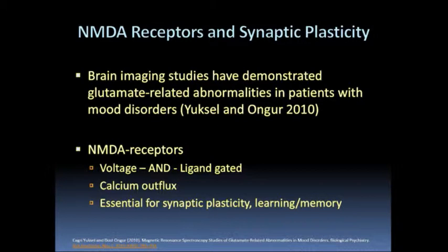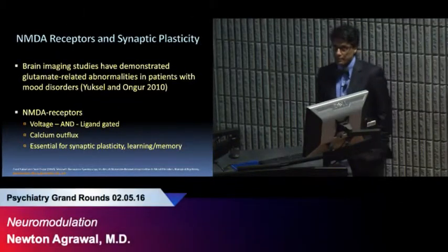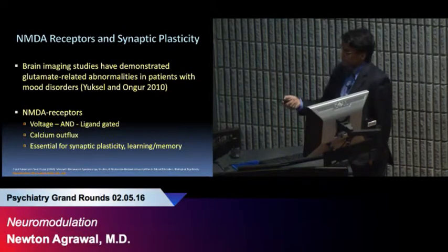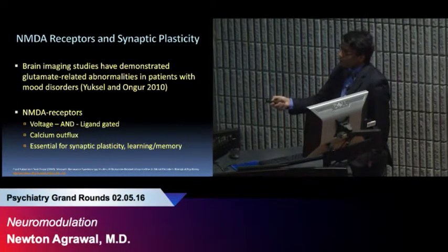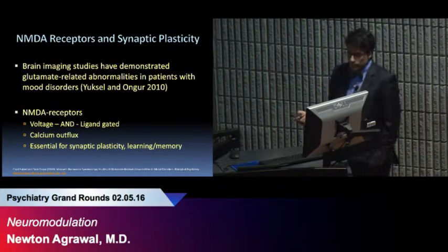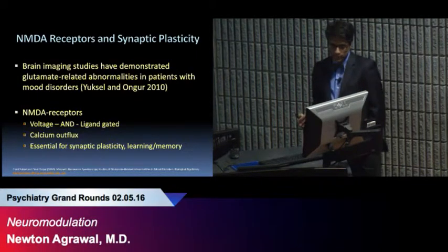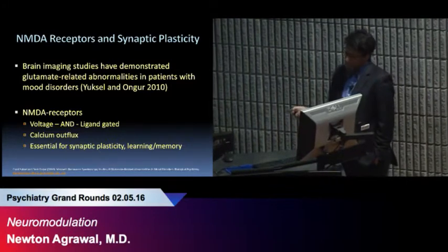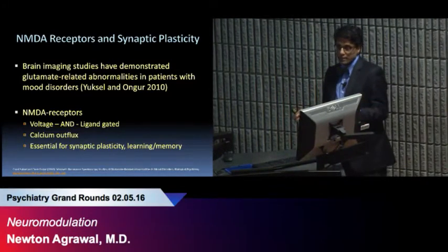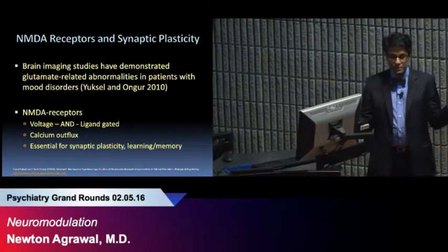NMDA receptors are important because they're principally involved in synaptic plasticity. Yuccel and Onger, Onger's at Harvard now, I think he's at Belmont, they demonstrated through brain imaging studies that glutamate abnormalities are related to patients with mood disorders. The most important thing though is to understand is that NMDA receptors are both voltage and ligand-gated. And not a lot of people talk about this. I guess I don't know if it's because I'm an electrical engineer, but this is something that's really important.